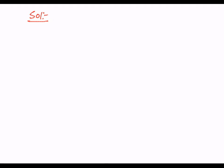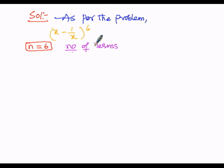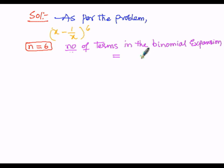In our solution, the binomial is (x − 1/x)^6, so the exponent is n = 6. The number of terms in the binomial expansion is given by n + 1, which equals 6 + 1 = 7. So there are 7 terms in the expansion.